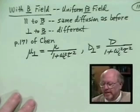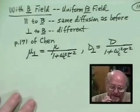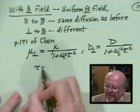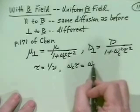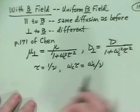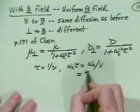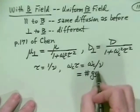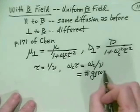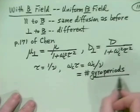Here, omega_c is the standard gyrofrequency, and tau is one over the collision frequency. So the parameter omega_c * tau represents the number of gyro periods per collision—or more precisely the radian number of gyro periods per collision.